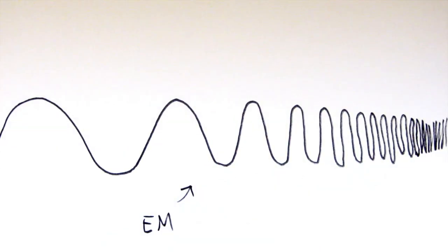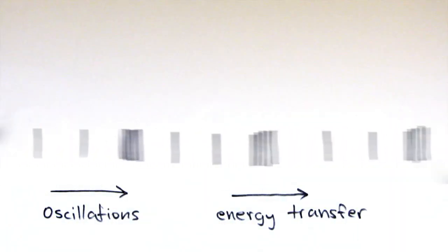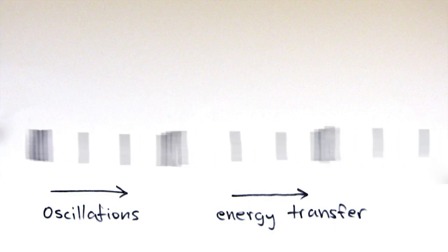Light and other types of electromagnetic radiation are transverse waves. In longitudinal waves, the oscillations are parallel to the direction of the energy transfer. Sound waves are longitudinal waves.